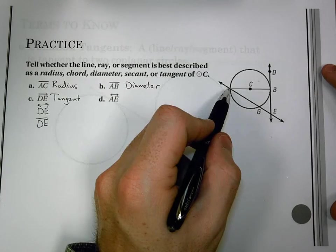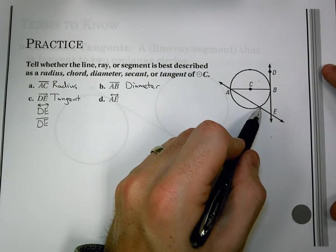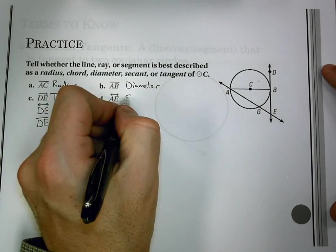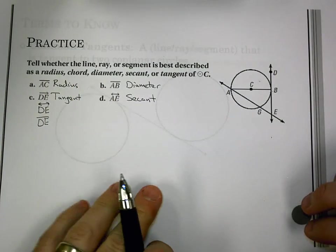And last we have AE hits A, hits E, keeps going beyond there, but it hits the circle at points A and G. That would make it a secant.